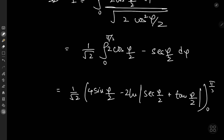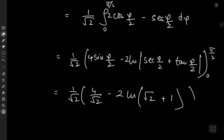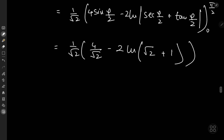At φ = 0 everything collapses to zero. At φ = π/2: we get 4 times sin(π/4) minus 2 ln|sec(π/4) + tan(π/4)|. Since sin(π/4) = 1/√2, we have 4/√2 = 2√2. Since sec(π/4) = √2 and tan(π/4) = 1, the log term is 2 ln(√2 + 1). Multiplying out gives the final answer: I = 2 − √2 ln(√2 + 1).